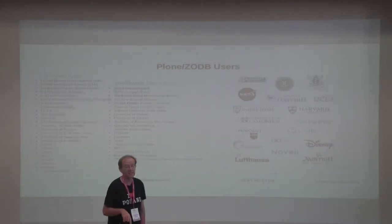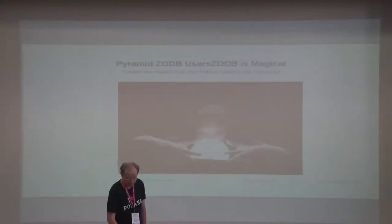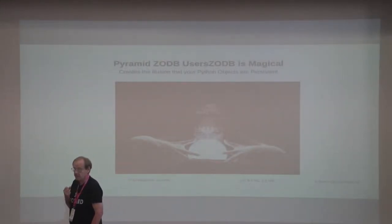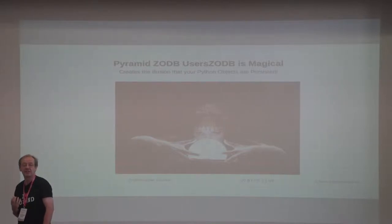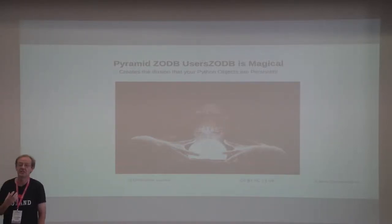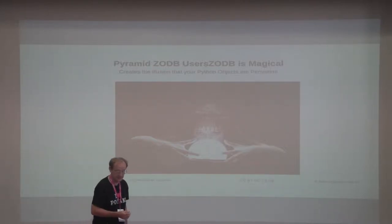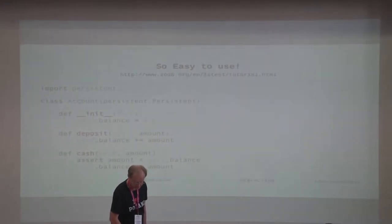In addition, there are all the Pyramid guys who use it. The thing about ZeoDB is it's a really magical database, because you don't have to read and you don't have to write the data — it just does it for you. It gives you this illusion that your Python objects are persistent. So let's take a look at how it does that.